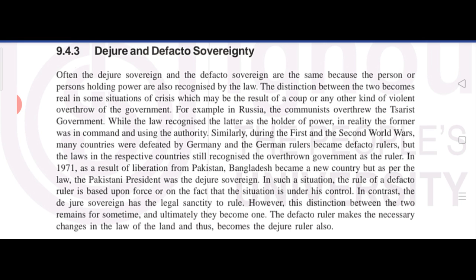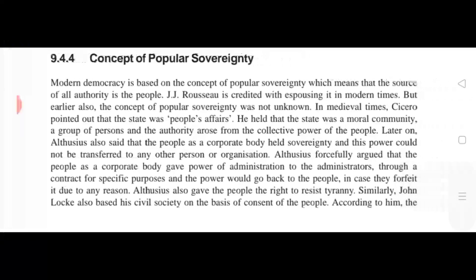In such a situation, the rule of a de facto ruler is based upon force. In simple terms, the de facto sovereign is the real sovereign — the one who actually holds power — while the de jure sovereign holds the legal right on paper, even though in reality the other person is working as the supreme authority.